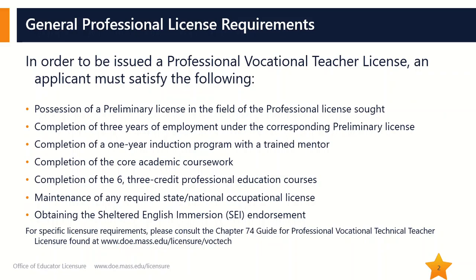In general, the requirements for a professional vocational educator license are made up of the following components: possession of a preliminary license in the field of the professional license sought; completion of three years of employment under the corresponding preliminary license; completion of a one-year induction program with a trained mentor; completion of the core academic coursework; completion of the six professional education courses; maintenance of any required state or national occupational license; and obtaining the Sheltered English Immersion endorsement.